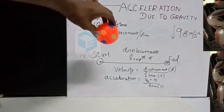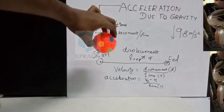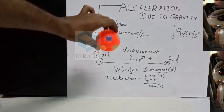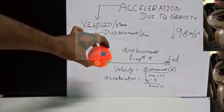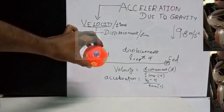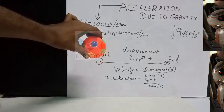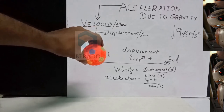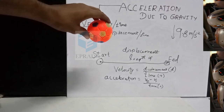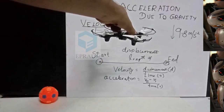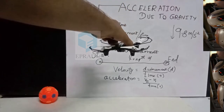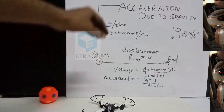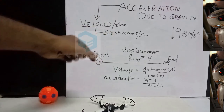So when we drop this ball from a height, the ball moves towards the ground faster because every second the gravitational force is pulling this ball towards the ground, and hence the velocity of this ball increases every second. It is called acceleration due to gravity. The gravitational pull increases the velocity of this ball every second, and hence the ball moves faster towards the ground. Drones and any other particle in air move towards the ground faster when dropped, because the velocity of the particle moving down towards earth increases every second.